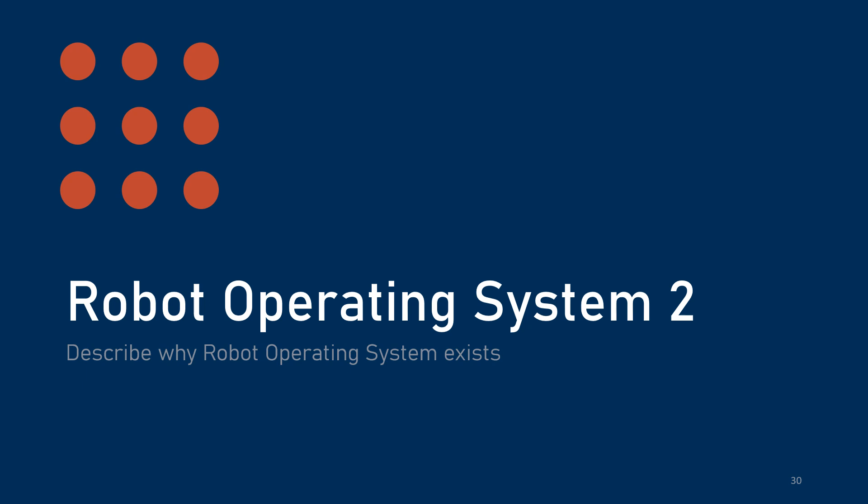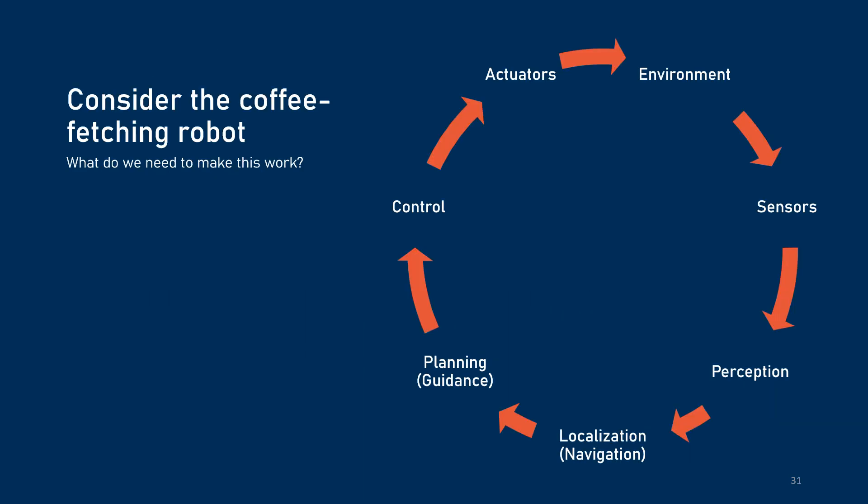You might be wondering who this ROS guy is that all the robotics people keep talking about. So let's again consider the coffee-fetching robot from Part 1 — the robot that you order to get coffee, and then it thinks about it, and then goes and does it for you.